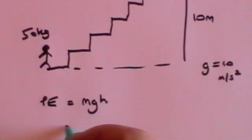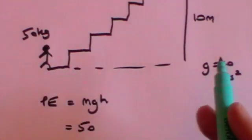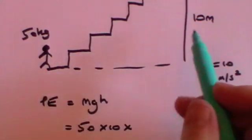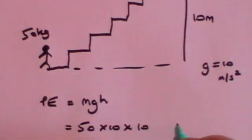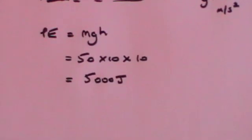Potential energy is going to be MGH, and that is going to equal my mass, which is 50 kilograms, times G, which is 10, times H, which is 10, and that equals 5,000 joules. So my potential energy when I reach the top of the stairs is 5,000 joules.